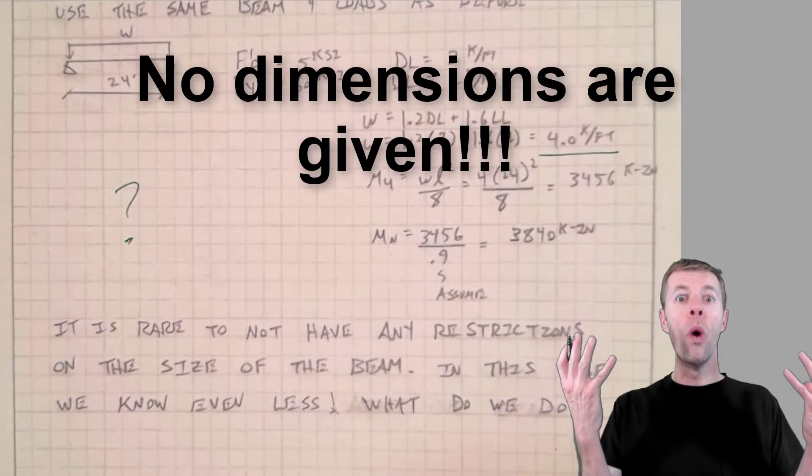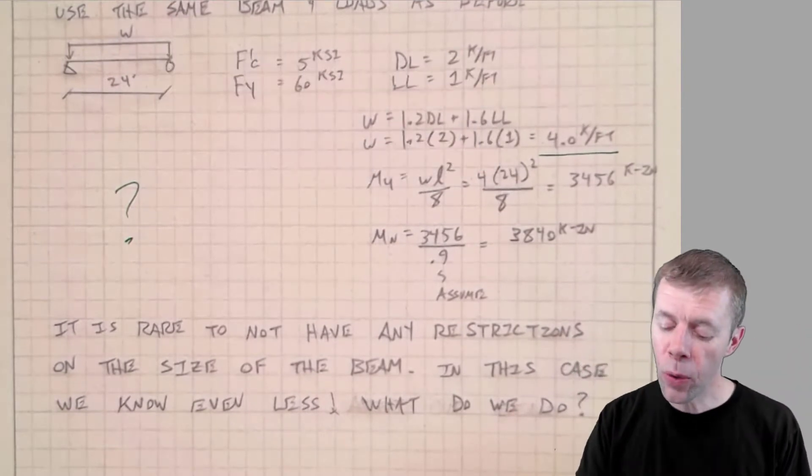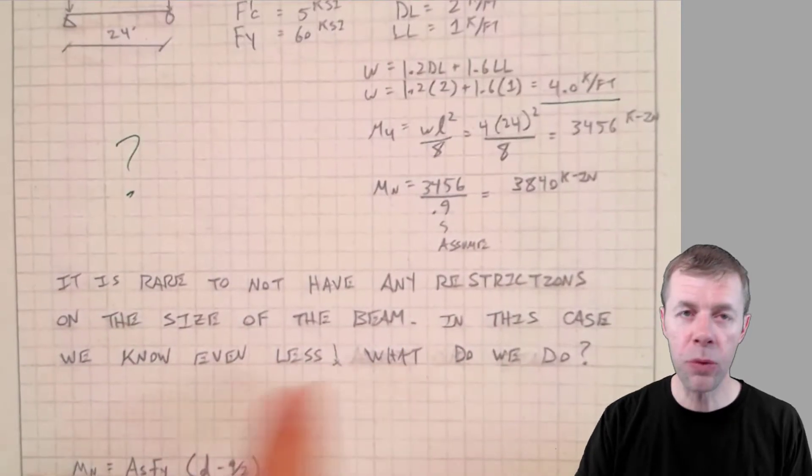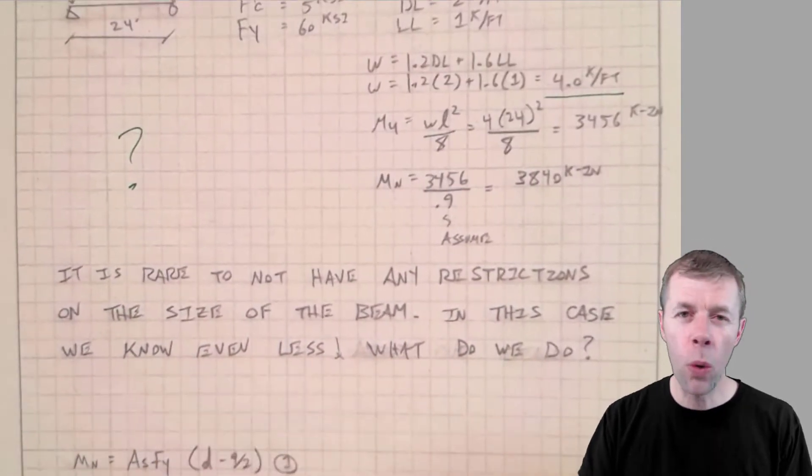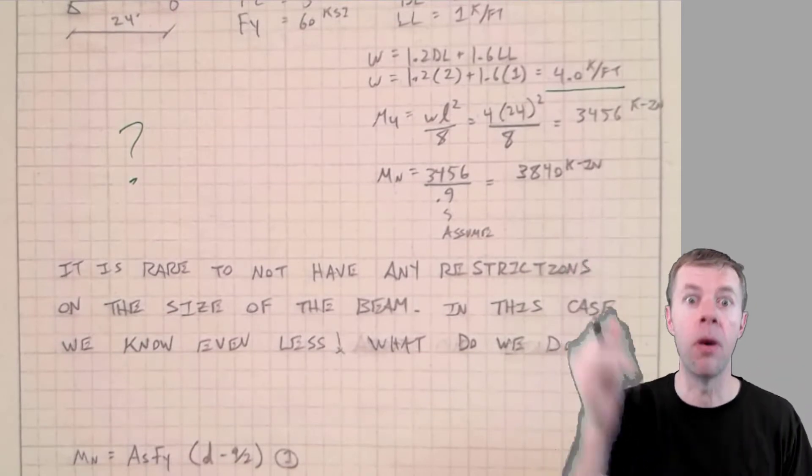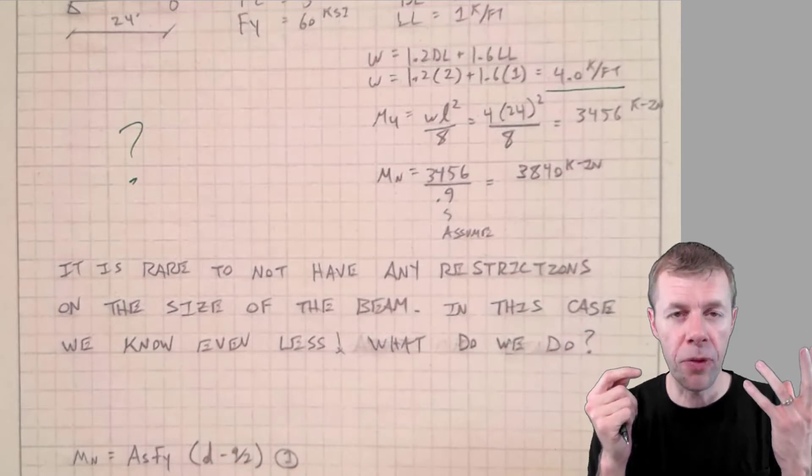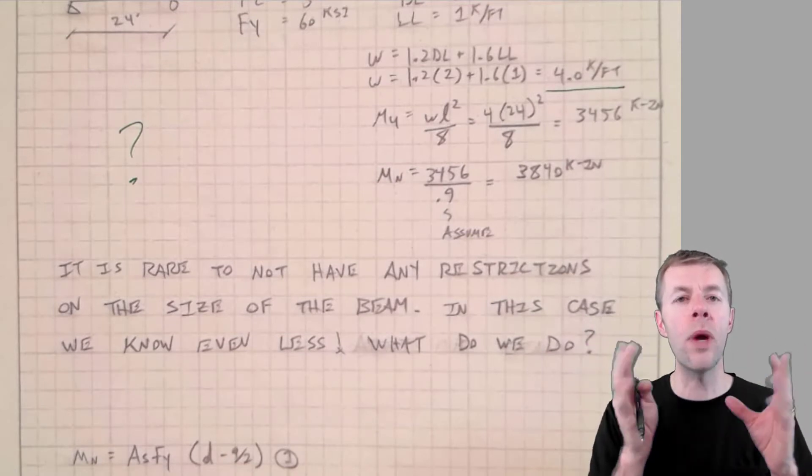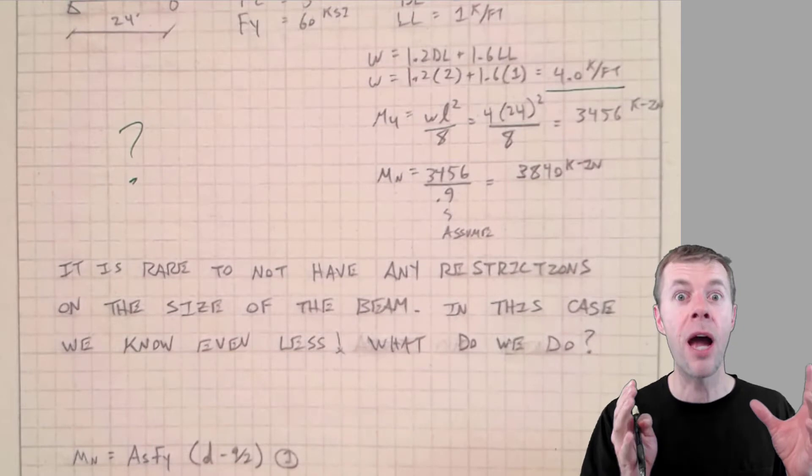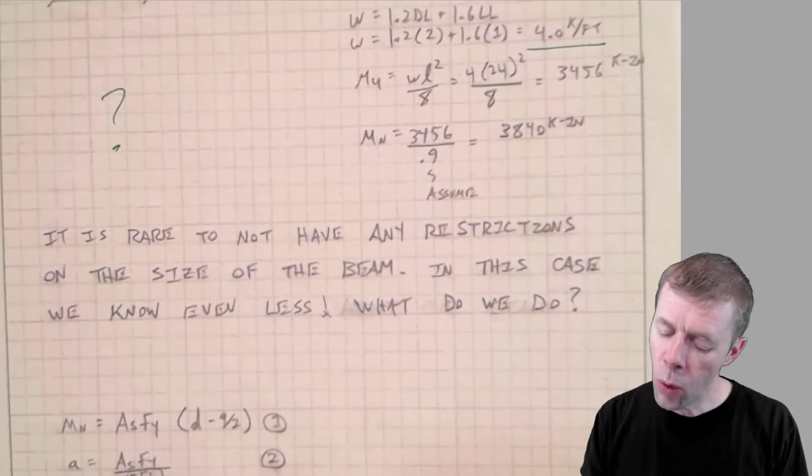I don't know what my cross section is. I get to pick it out. It's pretty rare to not have any restrictions on the size of your beam. People almost always want to restrict your depth because they don't want to hit their head on the beam or they want to run some pipe beside it. So they usually restrict either the width or the depth, but this time they didn't.